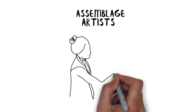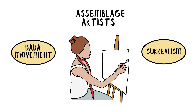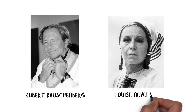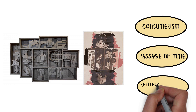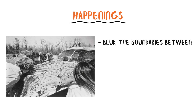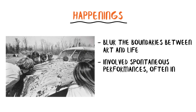Assemblage artists were influenced by the Dada movement and surrealism, incorporating found objects and materials into their artworks. Artists like Robert Rauschenberg and Louise Nevelson created three-dimensional compositions by assembling various objects and fragments into unified artworks. Their works explored themes of consumerism, the passage of time, and the reinterpretation of everyday objects. Happenings were artistic events that aimed to blur the boundaries between art and life. They involved spontaneous performances, often in non-traditional spaces, where audience participation was encouraged.